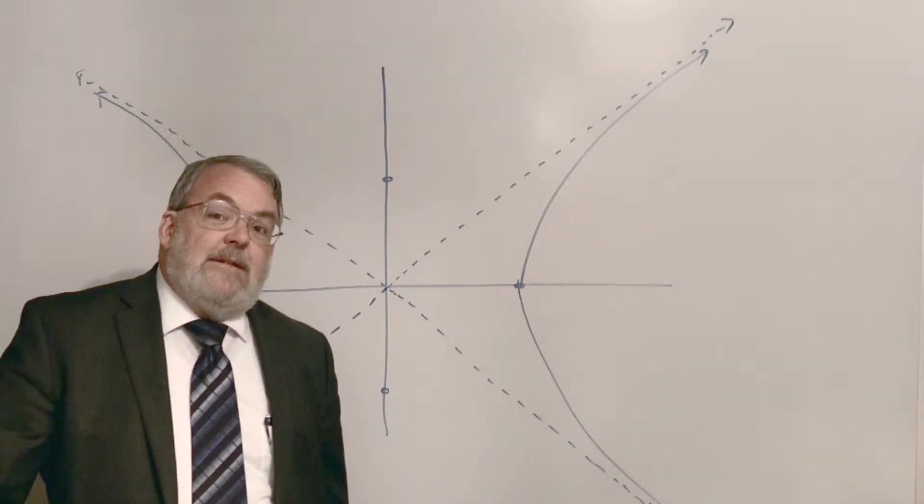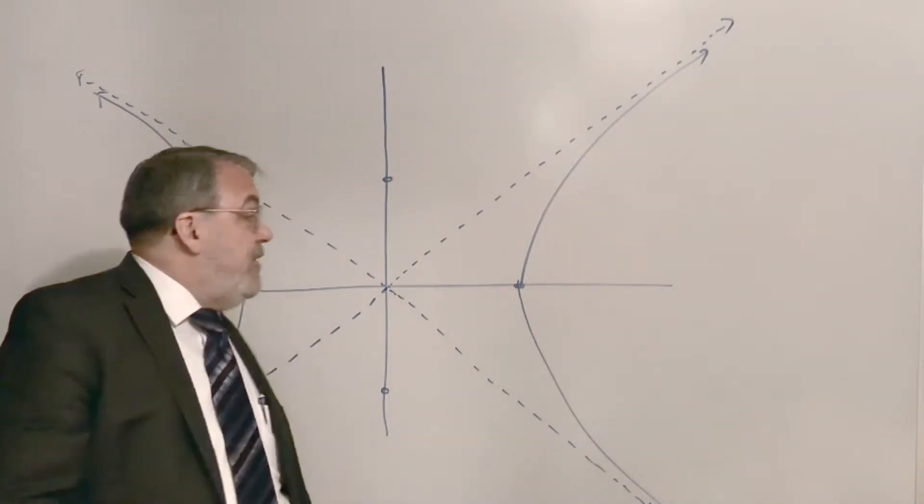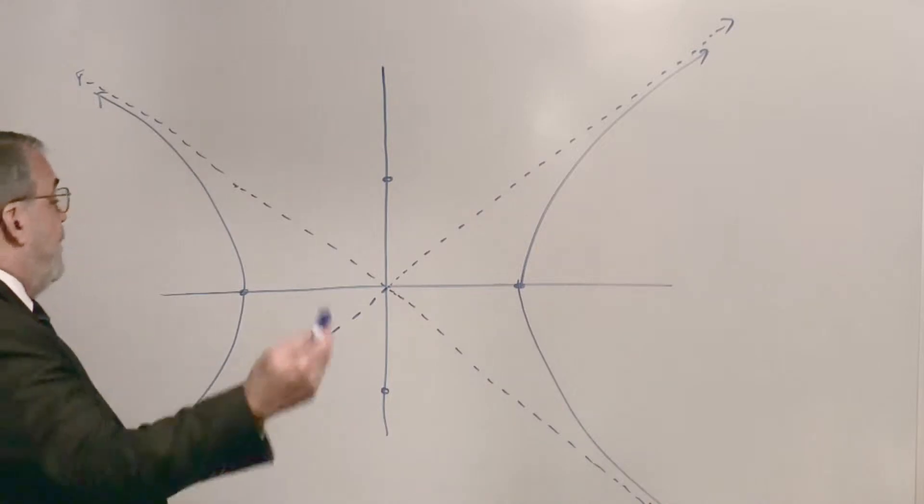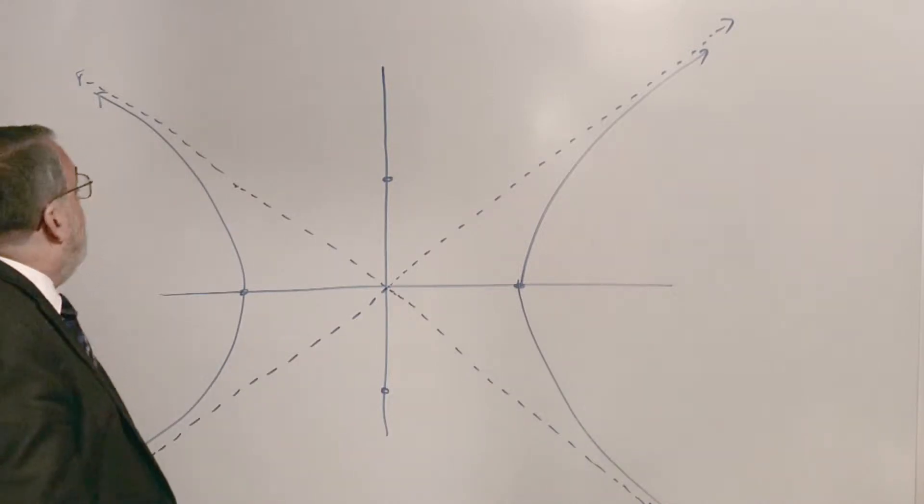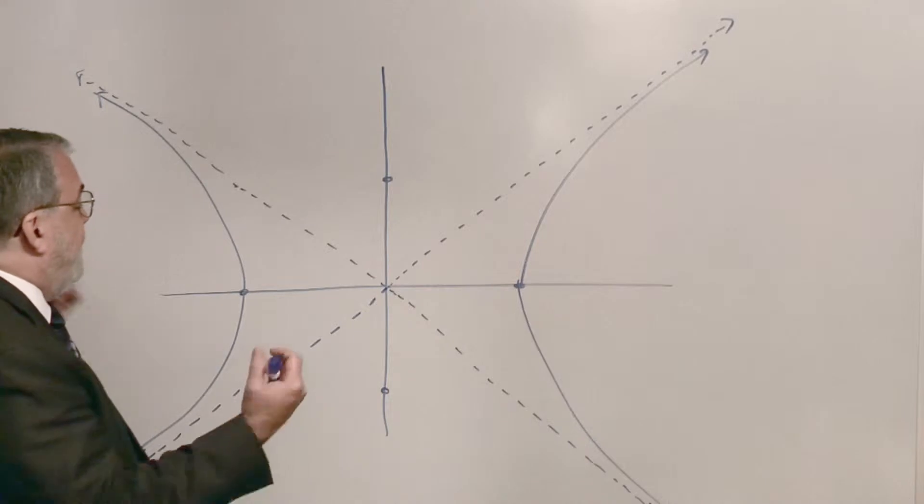I think it's worth a few minutes to look at the properties of hyperbolas. So here's a generic hyperbola, the x squared minus y squared variety, pointed sideways.